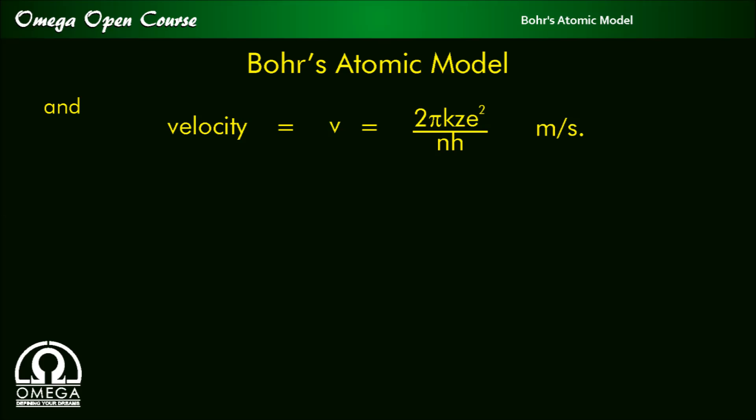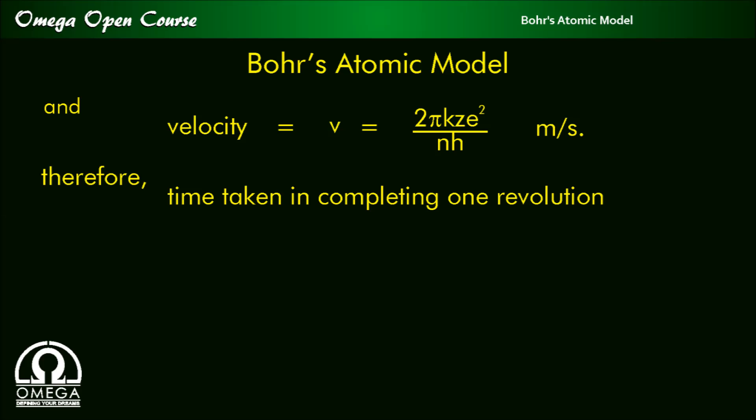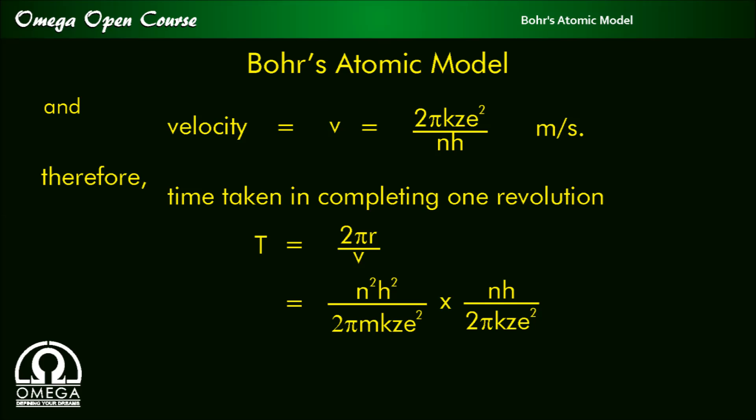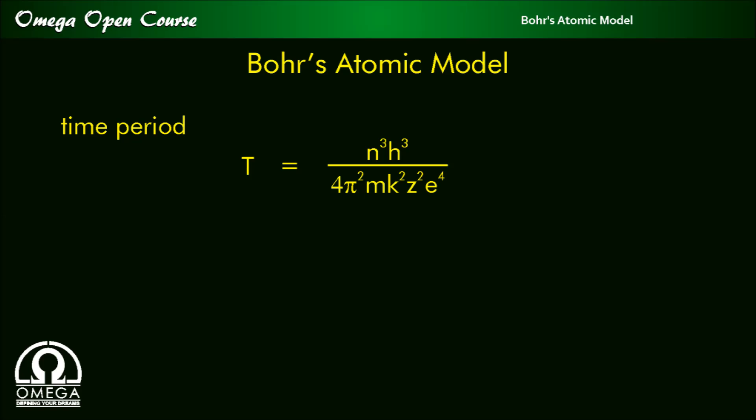And velocity v is equal to 2πkze² / nh meter per second. Therefore, time taken in completing one revolution, t is equal to 2πr / v, which equals (n²h² / 2πmkze²) × (nh / 2πkze²). Time period t is equal to n³h³ / 4π²mk²z²e⁴, which can be written as (h³ / 4π²mk²e⁴) × (n³ / z²).